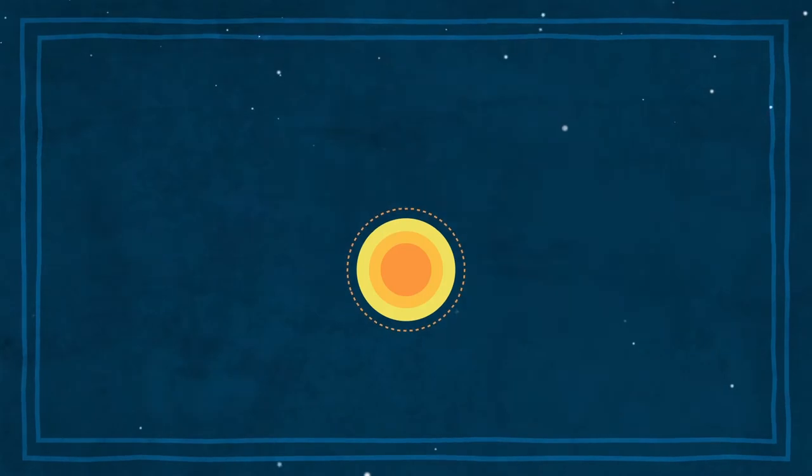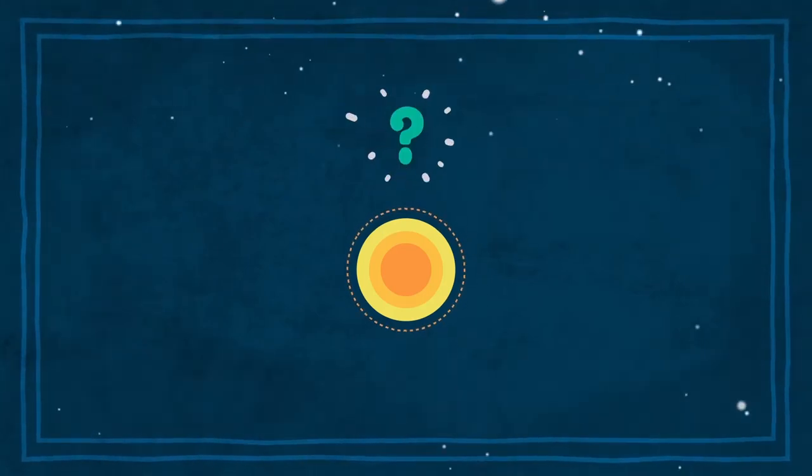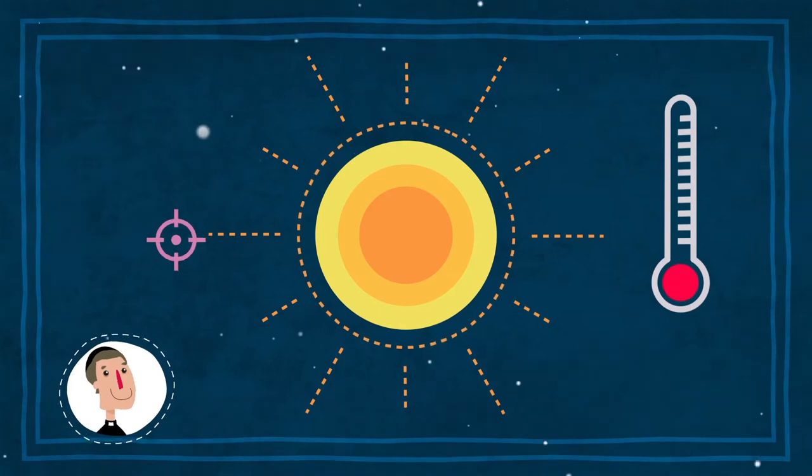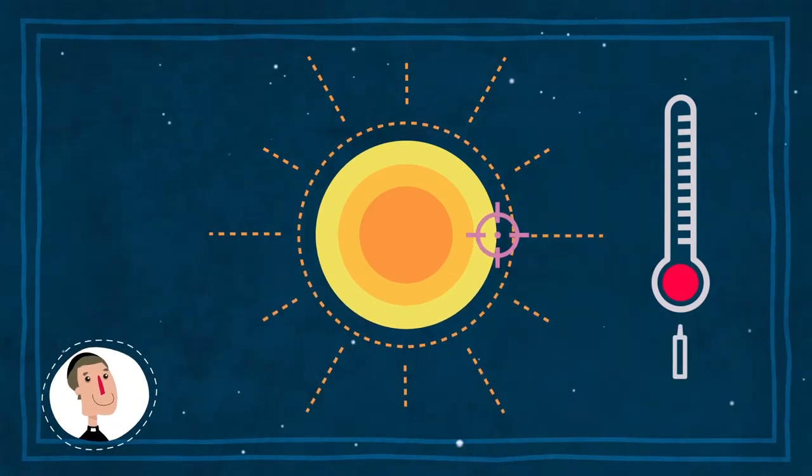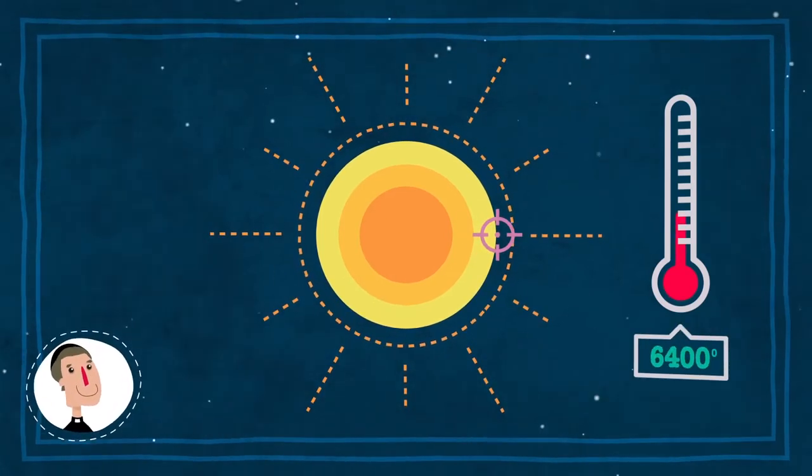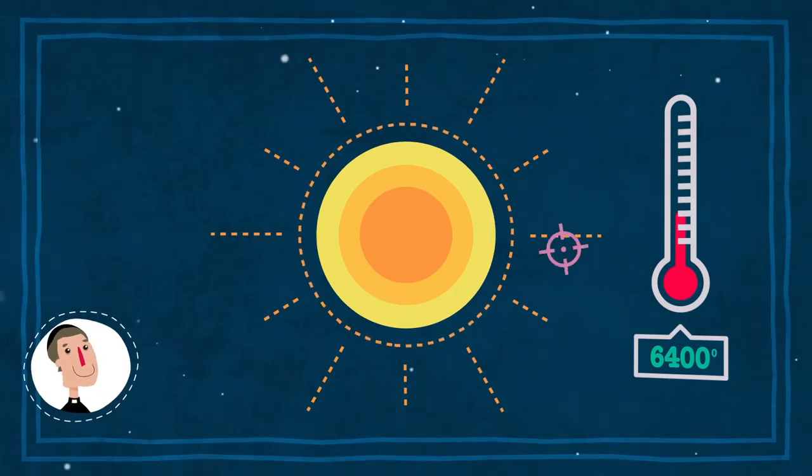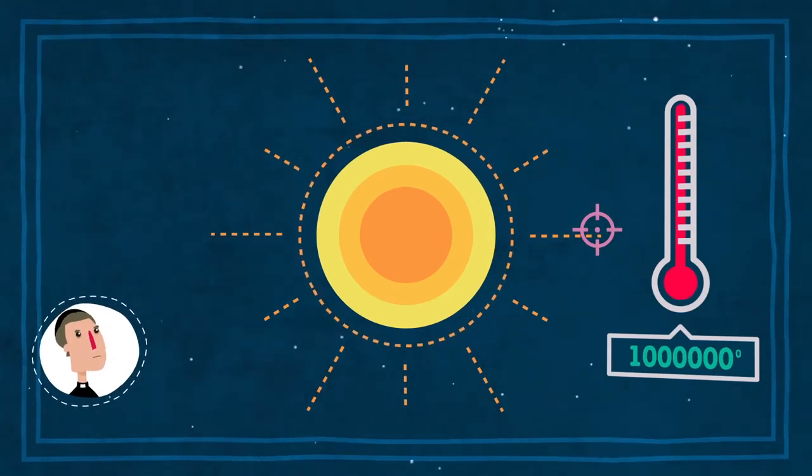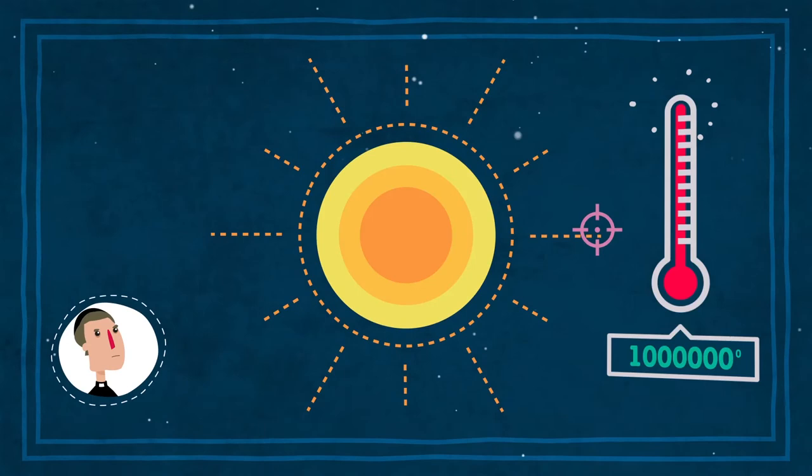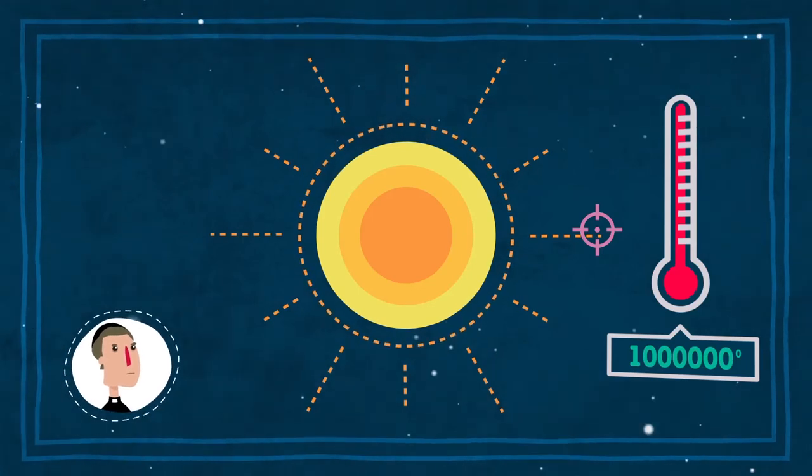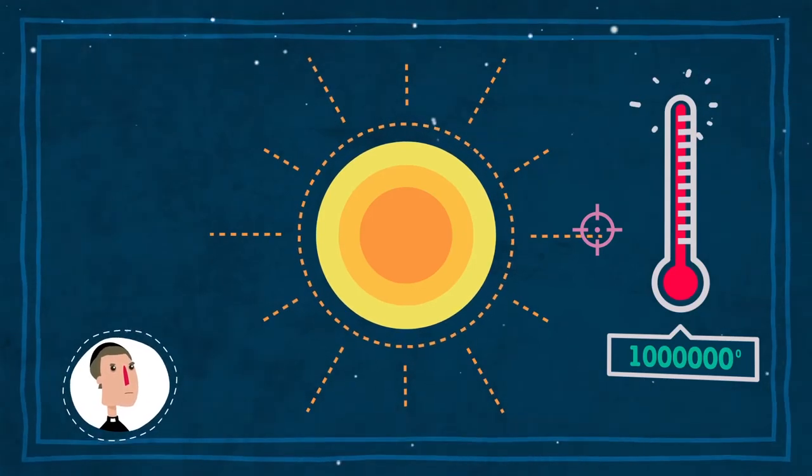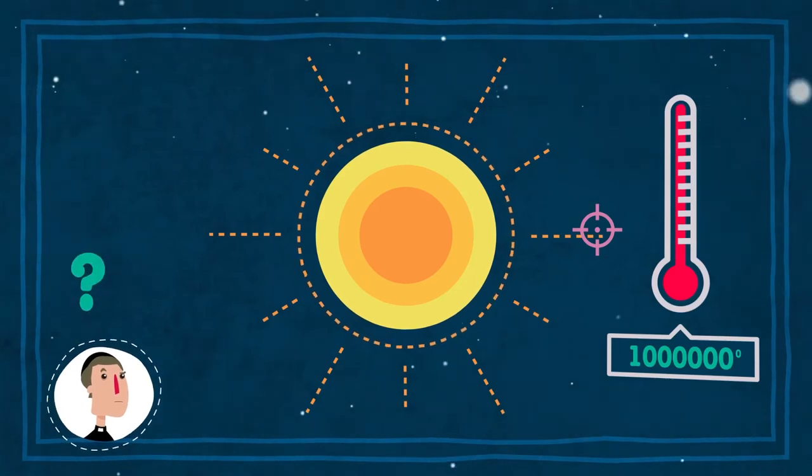Digamos que el Sol está lleno de enigmas no resueltos. Por ejemplo, ¿sabías que las capas externas están mucho más calientes que la superficie? La temperatura de la corona solar es de más de un millón de grados, mientras que apenas hay 6.000 en la superficie. Esto es un poco extraño, y aún no sabemos por qué.